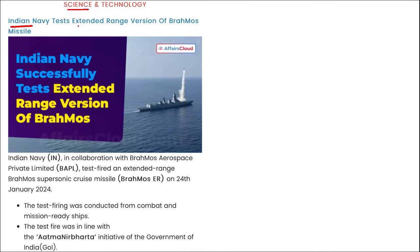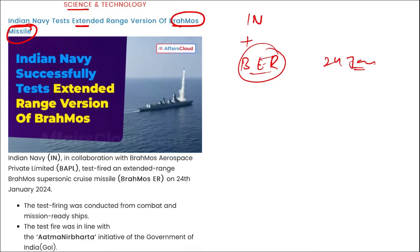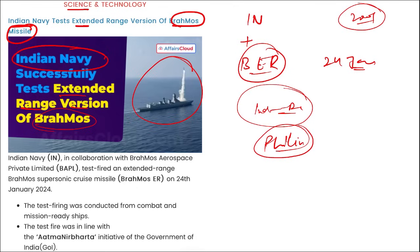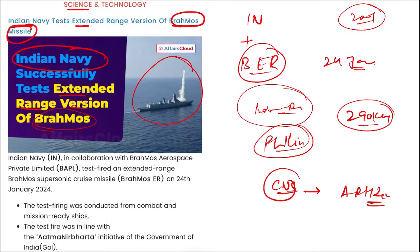In science and tech: Indian Navy recently tested the extended range version of the BrahMos missile on 24th of January. The test was in line with the Atmanirbhar Bharat initiative. BrahMos missile is a joint venture between India and Russia. Philippines became the first country to procure BrahMos missiles from India. BrahMos was first tested in 2001. The range has been extended from 290 kilometers to almost 500 kilometers. Chief of Naval Staff is Admiral R. Hari Kumar.